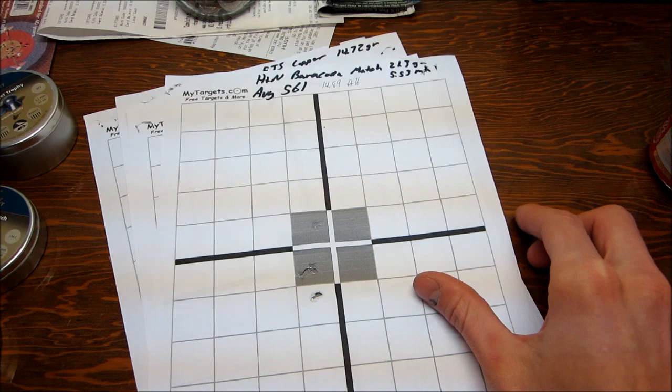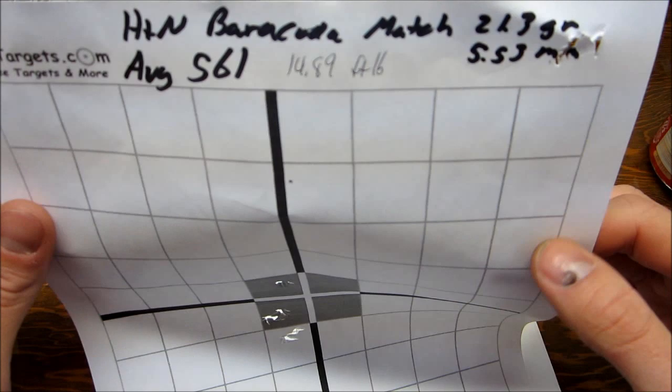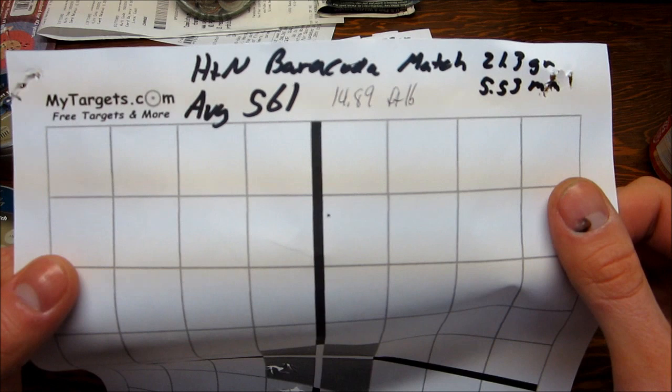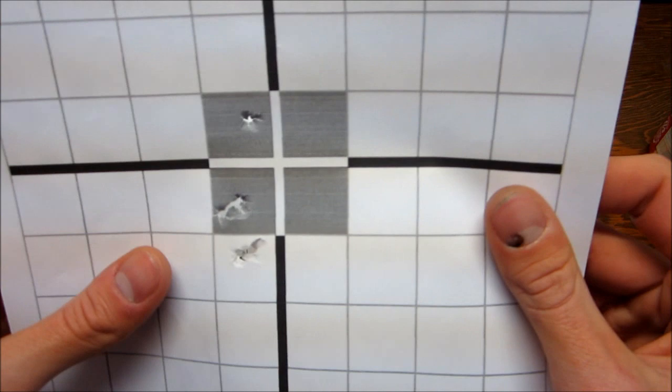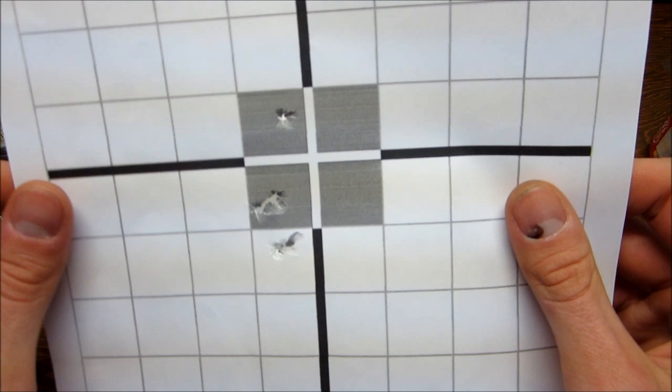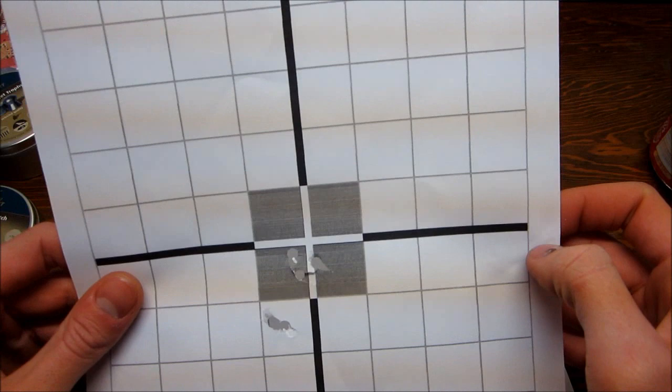These were ones that I was expecting to do pretty good with, the H&N Barracuda Match. They're a 21.3 grain pellet. It was pretty heavy for the regular trail gun, but they only shot 561 and 14.89 foot-pounds. They shot fairly good. I got two here, two here, and one high. So I think if I did a little more work with that, I could keep them in the same. And this is all the stock trigger and everything, I don't have the GTR or whatever.